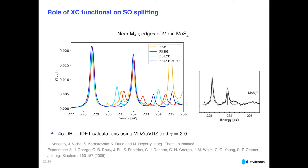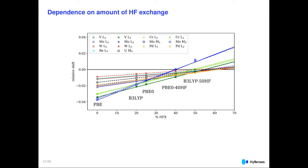We then did a large study of many complexes ranging from vanadium down to uranium, including the structures used. Basically all curves show a linear dependence on the exact amount of Hartree-Fock exchange. For high-energy transitions, 60% Hartree-Fock exchange gives very good agreement with experimental data. For transitions below around 1000 eV, 40% is more accurate. So: below 1000 eV use 40% exact Hartree-Fock exchange; above 1000 eV, use 60%. The choice between PBE0 or hybrid PBE is less important than the amount of exact exchange.